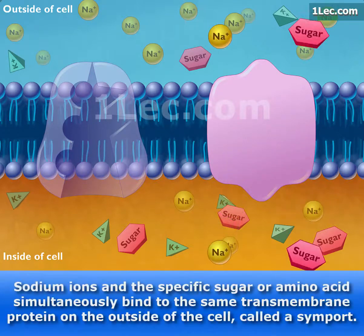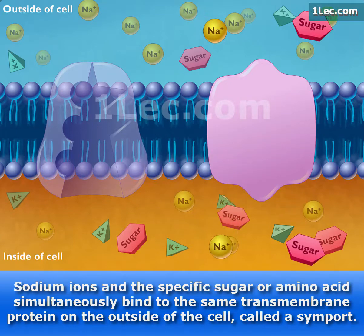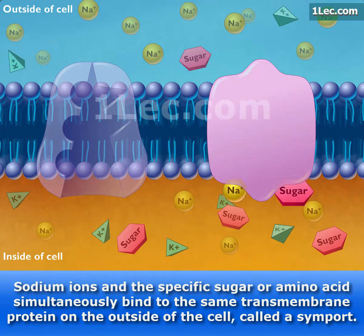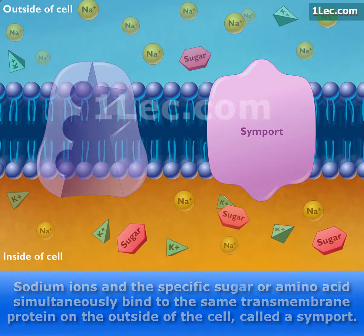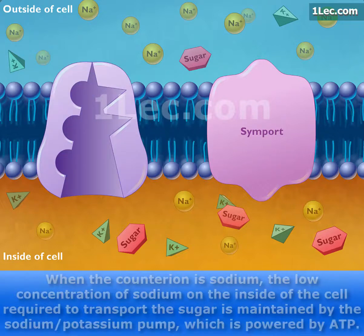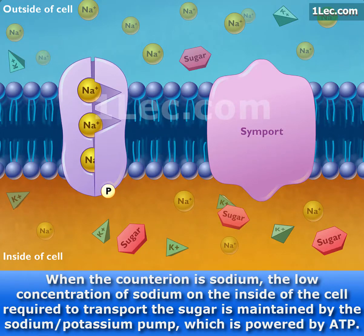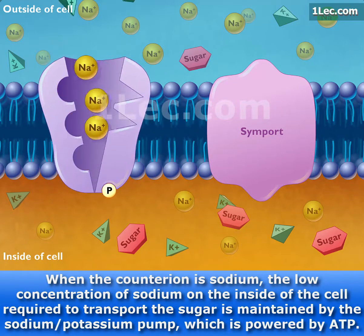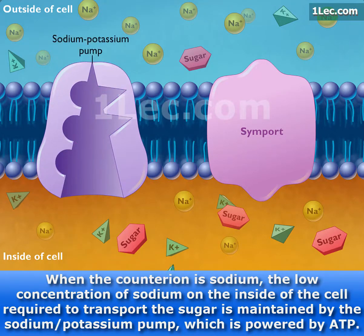Sodium ions and the specific sugar or amino acid simultaneously bind to the same transmembrane protein on the outside of the cell, called a symport. When the counter-ion is sodium, the low concentration of sodium on the inside of the cell required to transport the sugar is maintained by the sodium-potassium pump, which is powered by ATP.